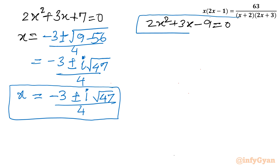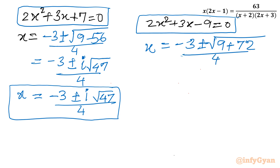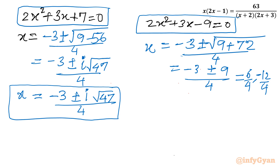Now for the second quadratic: 2x squared plus 3x minus 9 equal to 0. Applying the quadratic formula: x equals minus 3 plus or minus root(9 plus 72) over 4, equals minus 3 plus or minus root(81) over 4, equals minus 3 plus or minus 9 over 4. With the plus sign: 6 over 4 equals 3 over 2. With the minus sign: minus 12 over 4 equals minus 3. So we have two real values: x equals 3/2 and x equals minus 3.